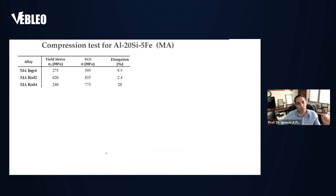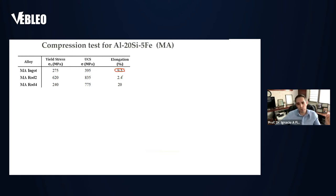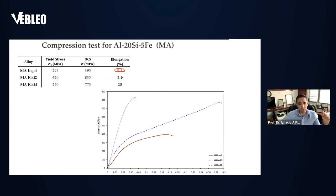For the master alloys, one of the most important parameters is the elongation and the UCS — the ultimate compressive strength. The compressive strength for the ingot is about 395 MPa with 9.5% elongation. However, if we apply rapid solidification via suction casting, we increase the UCS but the elongation drops to 2.4%. For the 4 mm diameter rod, we increase the plastic deformation to 20%, essentially doubling the elongation while also doubling the UCS. Here we can see the stress-strain curve and where the material fractures.